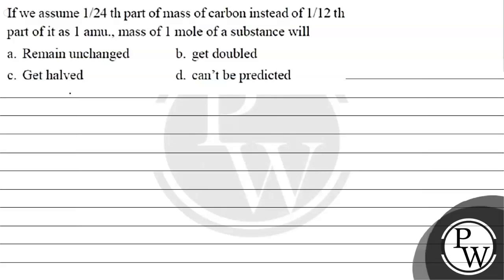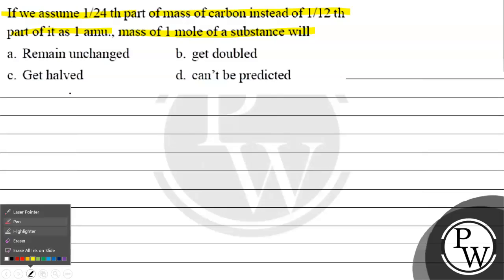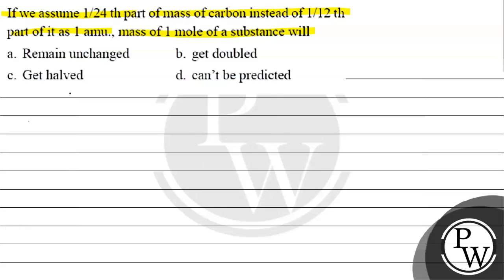Let's read this question. The question says: if you assume one by twenty-fourth part of mass of carbon instead of one twelfth part of it as one amu, the mass of one mole of a substance will — option A: remain unchanged, option B: get doubled, option C: get halved, option D: cannot be predicted.